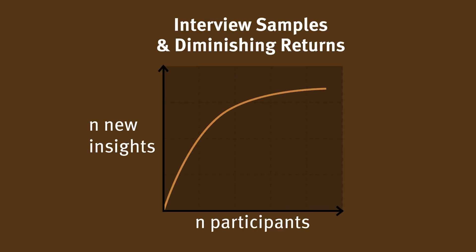So, how do we know how many people we need for a qualitative study? The right number of participants is the number that gets you close to something called saturation. Saturation can be described as the point where the returns on what you're learning diminish. When you've hit saturation, each extra research session produces less new information. As more sessions are added, you'll likely hear or see the same thing happening more frequently.